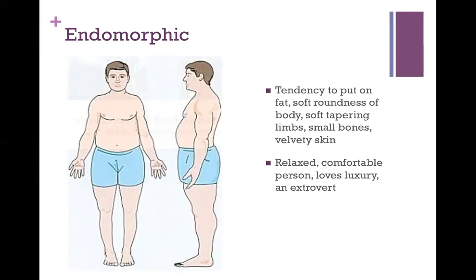Those are the three body types Sheldon came up with. His original work was only done with males, but it was later applied to females as well. Although he did use the scientific method to classify these body types, he used a wide and overarching range of personality characteristics that he claims are associated with each body type. So while he may have scientifically catalogued types of bodies, he made some pretty big inferences in terms of the personality associated with those body types.